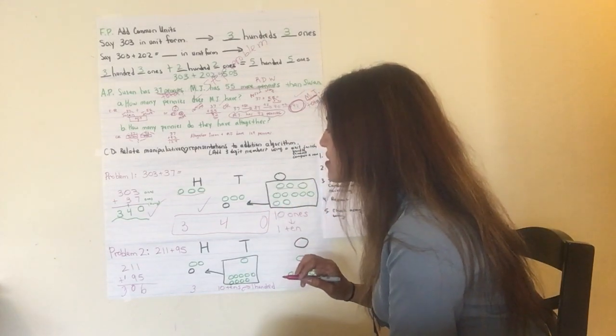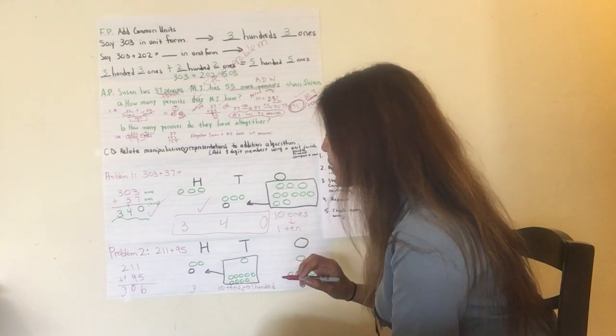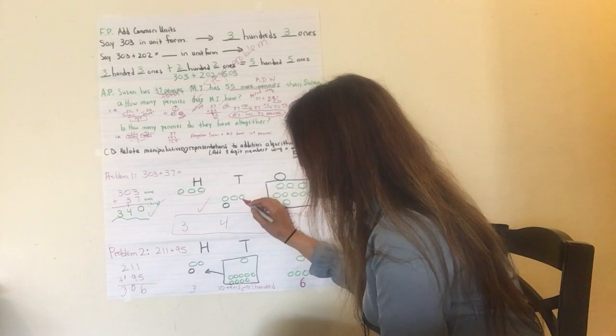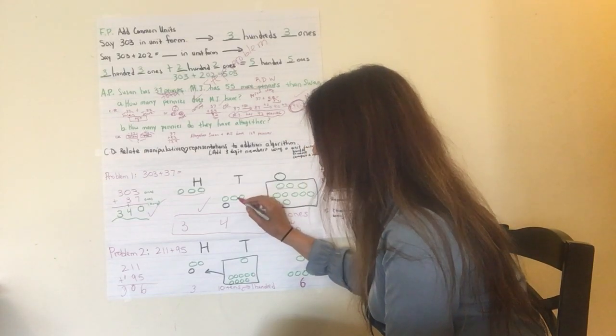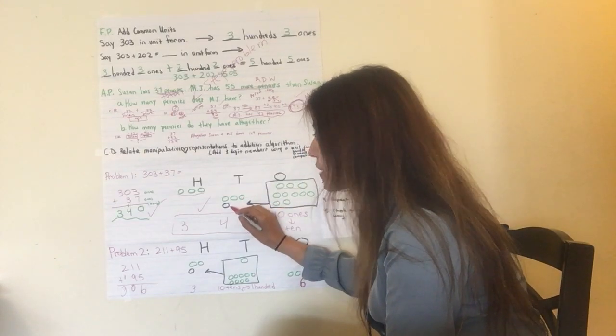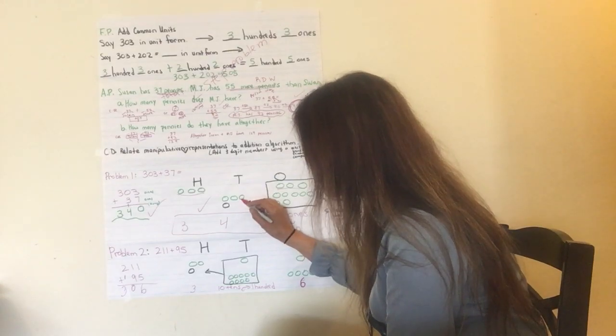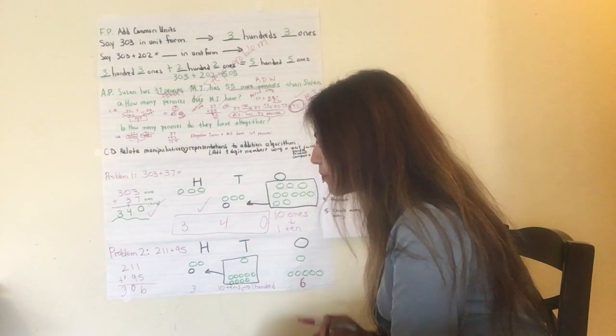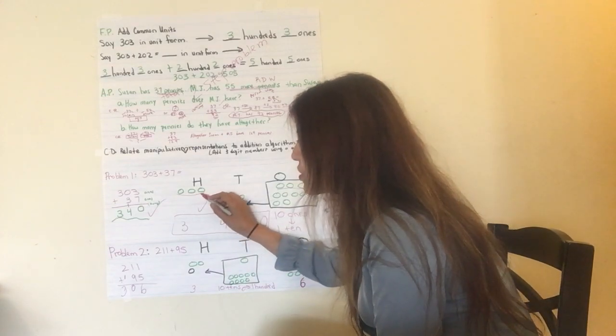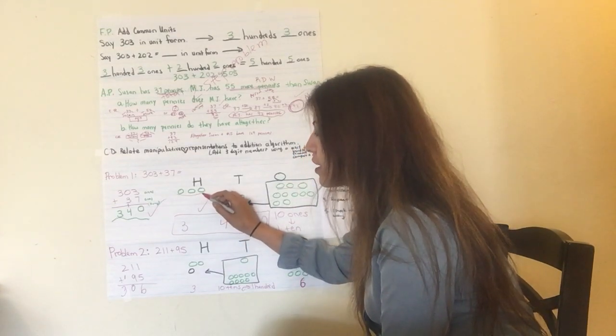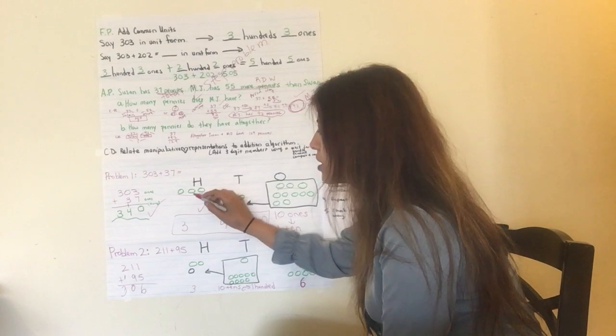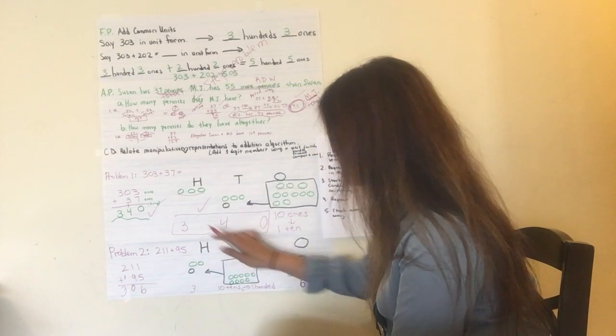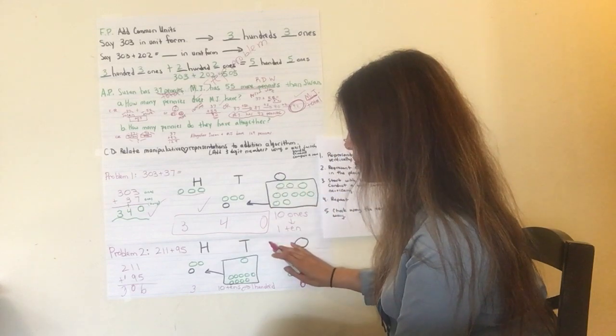Now, I add the second, the tens column. Right? So, here I have three tens from the 37, and then I have the new 1 ten, right? So, three tens plus 1 ten equals four tens. Do you see that? Good job. And then, I just have the 300 that's still remaining there. Nothing happens to the hundreds column. I bring that three down. I have 340 when you use the place value chart. Good job.